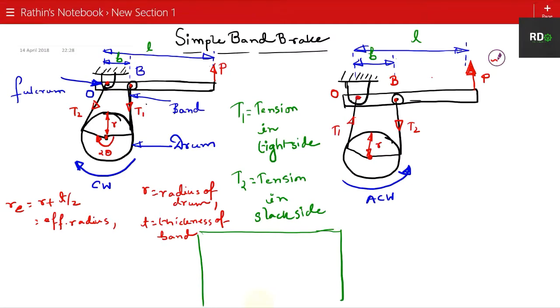This is the first case of simple band brake, using the clockwise arrangement of the drum. In the second case, we have the anti-clockwise arrangement. In both cases, T1 is the tension in the tight side and T2 is the tension in the slack side, where there is less tension. As you can see, O is the fulcrum point in both cases.